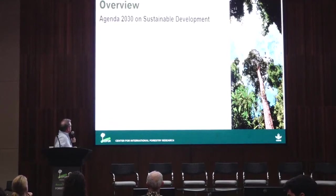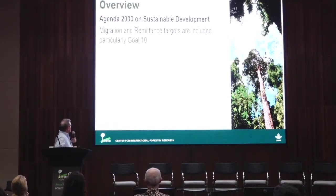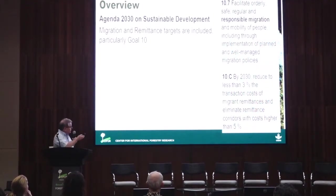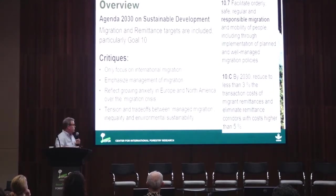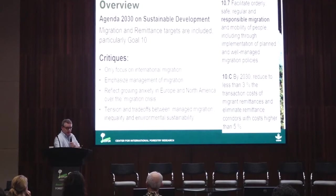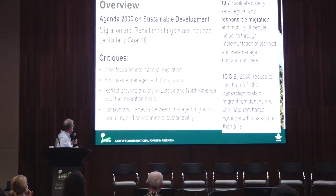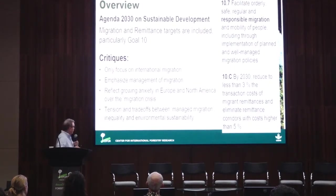In the Agenda 2030 on sustainable development, migration and remittances targets are included, particularly in Goal 10, but they're dealt with in a very passing way. Critiques include that migration only focuses on international migration, it emphasizes the management of migration rather than taking advantage of migratory flows, and it reflects growing anxiety in Europe and North America over the migration crisis. There's also a lack of attention to the tensions and trade-offs between managed migration, inequality, and environmental sustainability.